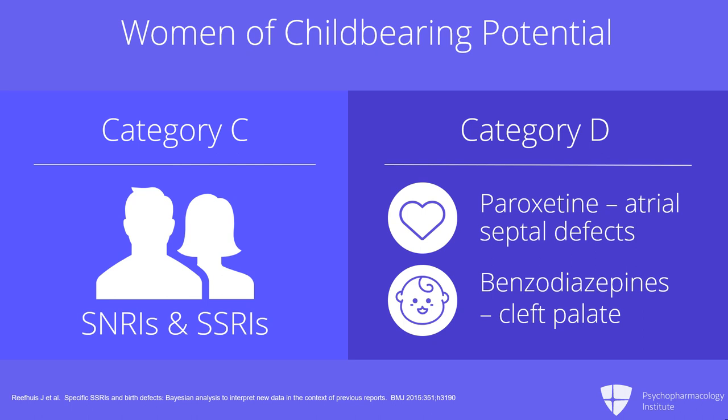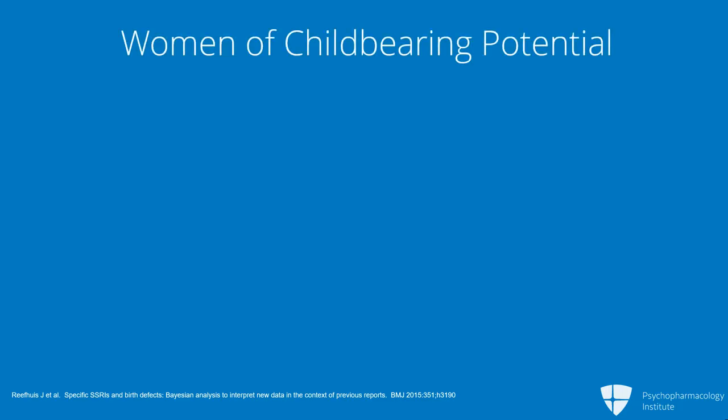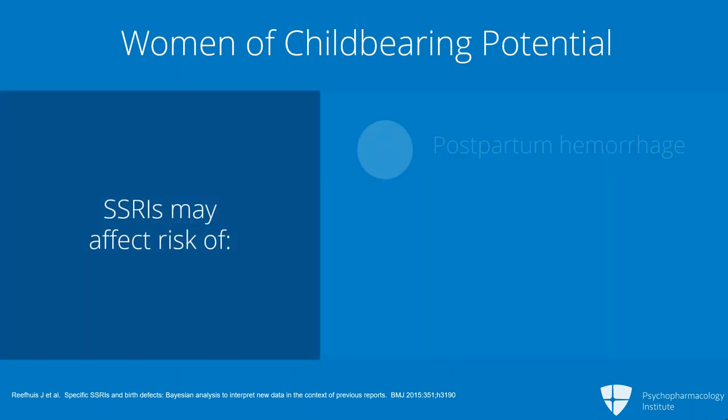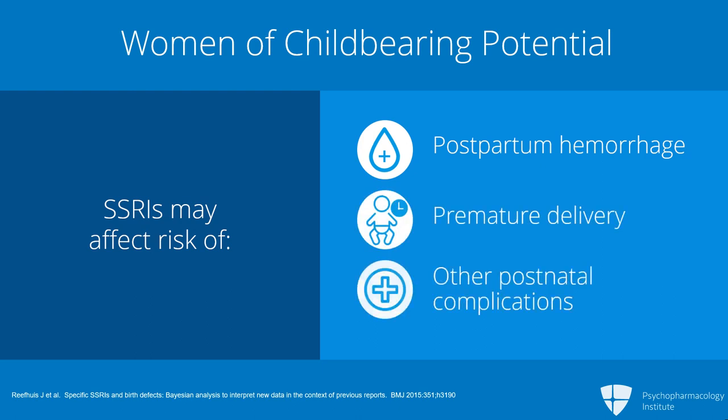A recent large observational study by Reis confirmed that the category D designation is deserved by paroxetine. The last point for women of childbearing potential is that SSRIs may affect risks of postpartum hemorrhage, premature delivery, and other postnatal complications. These are statistical findings but may be due to confounding by indication — it remains unclear whether it's the antidepressant or the underlying condition being treated that causes those complications.